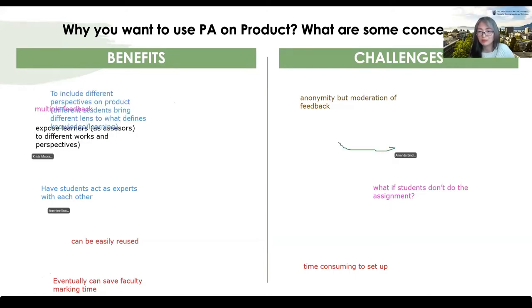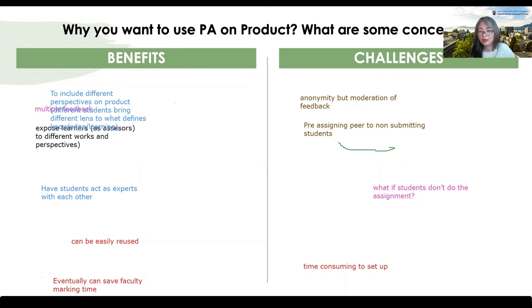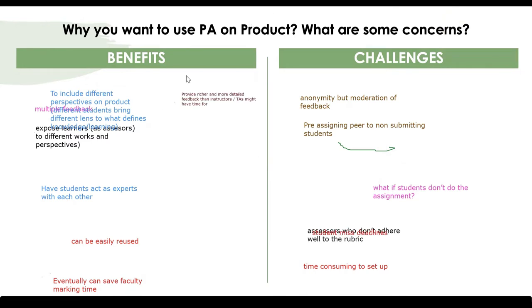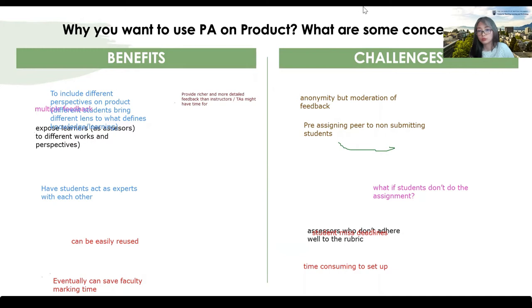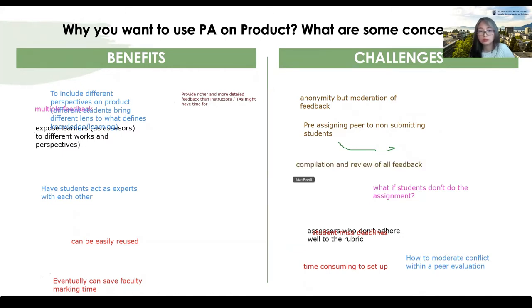What if a student didn't do the assignment? That's one of the biggest challenges that many instructors experience. Later, Pete and Amanda will share how they prevent this from happening. We need to think about the benefits to get student buy-in so they can really enjoy participation in the peer review process. Some challenges can be overcome by preparing the peer assessment with care and choosing the right tool to support the process.